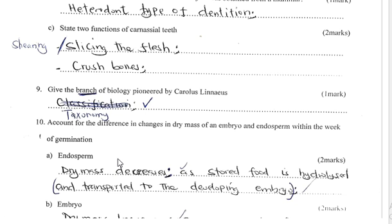Question 9: Give the branch of biology pioneered by Carolus Linnaeus — that is taxonomy.